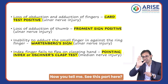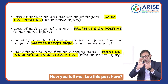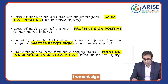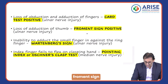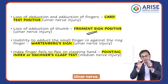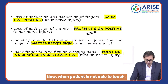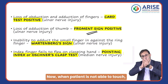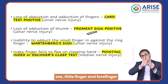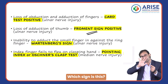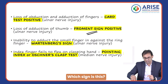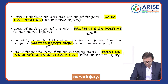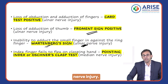In the same case, there is also loss of adduction of the thumb. This sign — seen from inside — is also because of the ulnar nerve. When the patient is not able to touch the little finger and ring finger together, this is called Wartenberg sign, and this is also due to ulnar nerve injury.